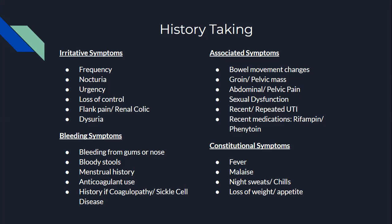Ask about bleeding symptoms. Does the patient notice any bleeding from their gums when brushing or from eating? Or bleeding from their nose without any trauma? Ask about bloody stools. Ask about menstrual history for female patients — ask about their last menstrual period, as this is important for possible cross-contamination in the urine sample. Ask if they use any anticoagulants, or if they have any history of coagulopathies or sickle cell disease.